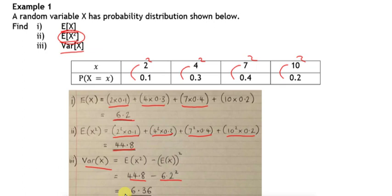That variance can be calculated using either of the two formulas, they'll both give you the same answer, or could be calculated on your calculator in the usual way we would do for a frequency table, entering the x values and then entering the probability values as our frequency.